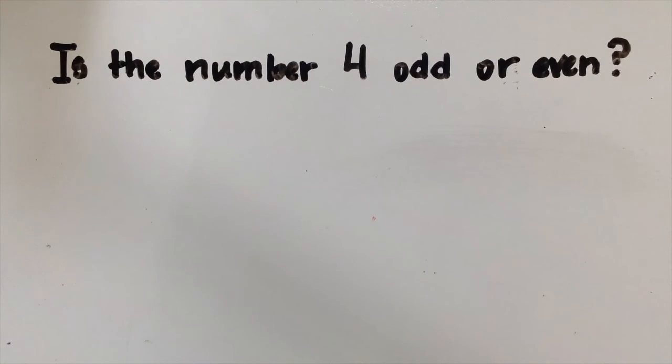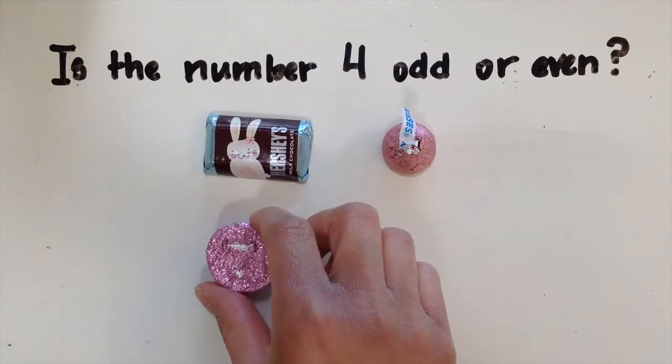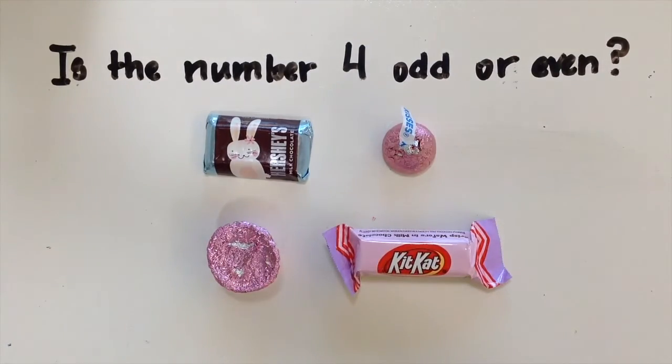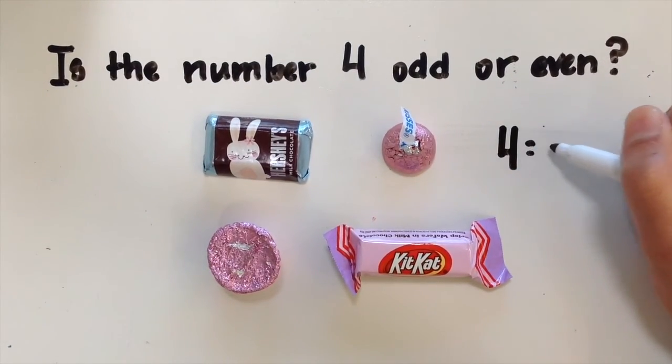So the next problem, number two says, is the number four odd or even? So I'm going to do the same thing that I did for number one, but instead of using puffs, I'm actually going to be using some candy from an Easter basket that Mrs. Forda made for me because she's so nice. So I have one, two. Remember, I'm pairing them up. One, two. So I can see that I have formed two rows horizontally like my eyebrows. And then I have also formed two columns, from top to bottom. And I can see that all of my pieces match up with each other. They are all in pairs. So that means that the number four is an even number.